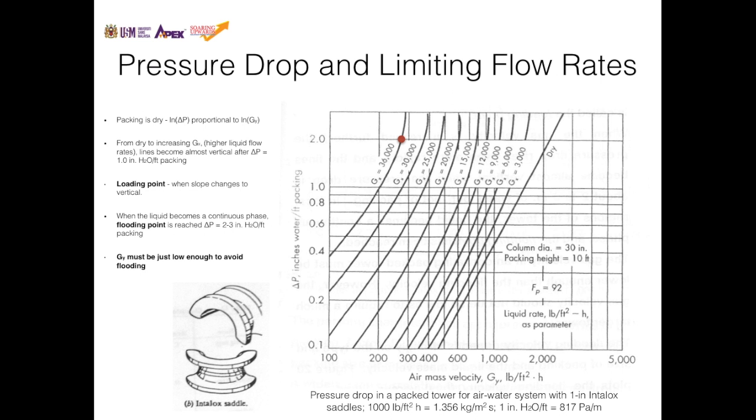Now we look at pressure drop and limiting flow rates in a packed absorption column. This figure shows the relationship between gas flow rate, denoted as GY, and pressure drop. Pressure drop is bad in an absorption column because if there is high pressure drop, then flooding would occur. This is the relationship between air mass velocity and pressure drop in a packed tower for the air-water system that uses this 1-inch Intalox saddle shown here.